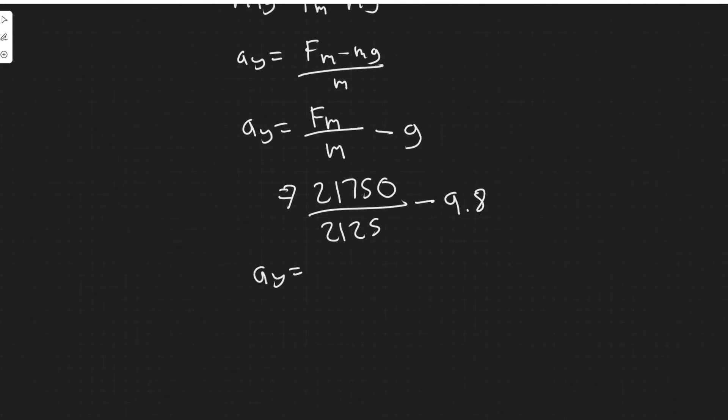So a_y equals, let me get on my calculator. So 21,750 divided by 2,125 minus 9.8. You'll get 0.435, and the units are meters per second squared. That's how we measure acceleration.